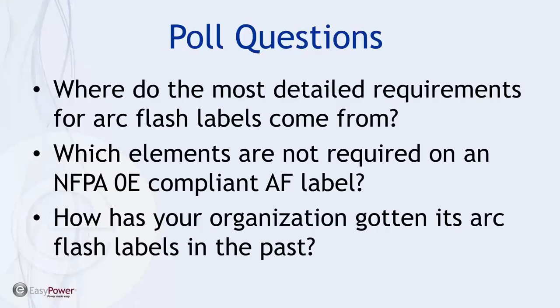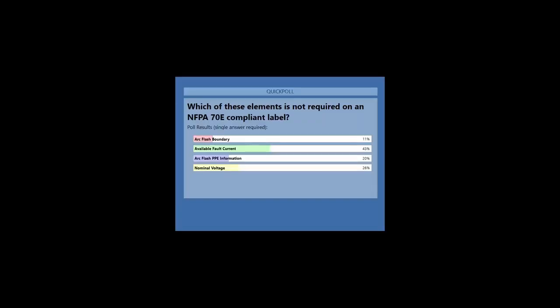Next question: which elements are not required on an NFPA 70E compliant arc flash label? This is some tricky information, so I won't be surprised if we get a good spread of thoughts here. It looks like we're about halfway to a quorum — we'll leave it open for another 15 seconds. Here's how folks have weighed in. It looks like we have a heavy favorite.